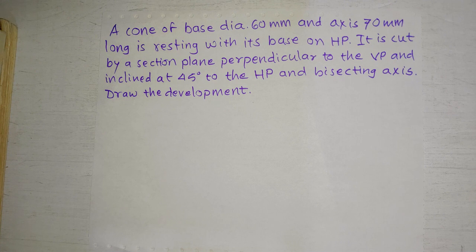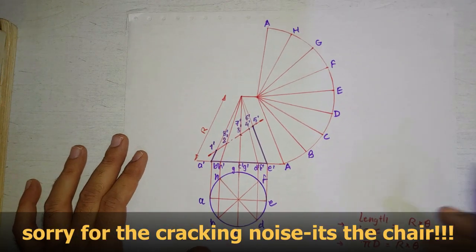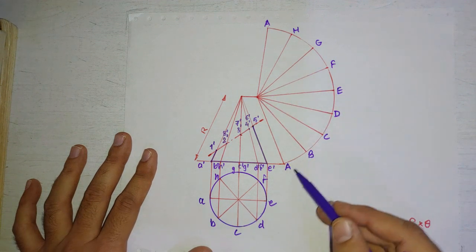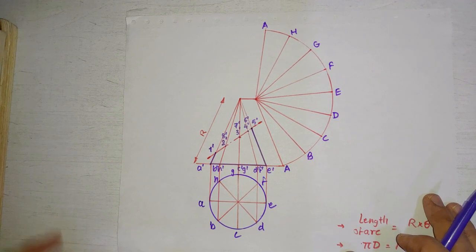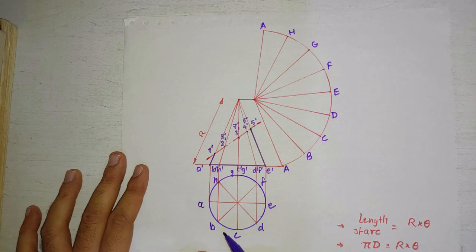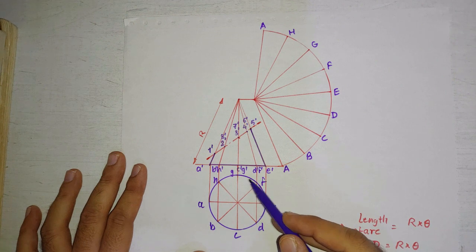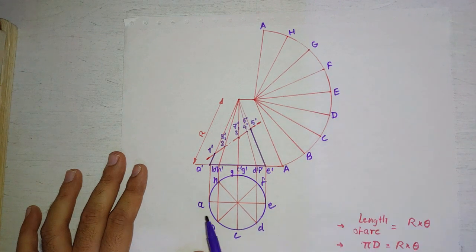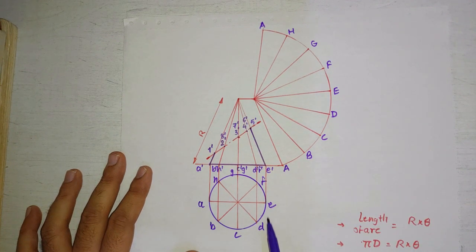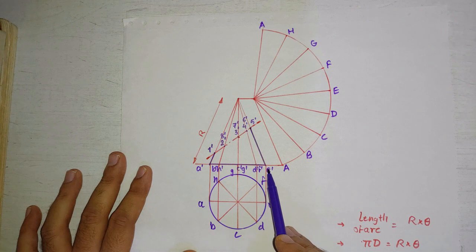First, let's understand: if you have a cone and cut it along a generator and open it, you get a sector shape. To solve the problem, we start by drawing the top view of the cone, then the front view. We divide the circle into eight parts. These projections give us the required generators in the front view, with notations a, b, c, d, e, f, g, h in the top view, and a prime, b prime, h prime, c prime, g prime, d prime, f prime, e prime in the front view.